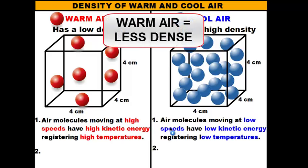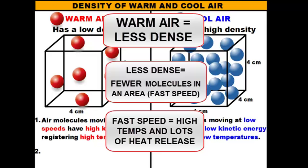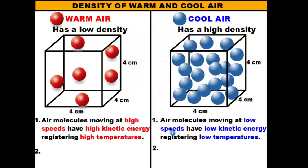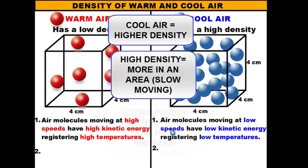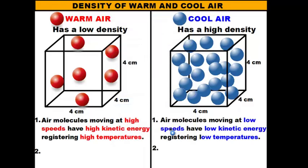Warm air is less dense because they move fast, and as a result there's fewer of them in an area. And because of their fast speeds, they register high temperatures, which is what makes them warm. Cool air is the opposite. Cool air moves slowly, so there are more of them in a given area. And because they move slowly, they have low kinetic energy and lower temperatures.